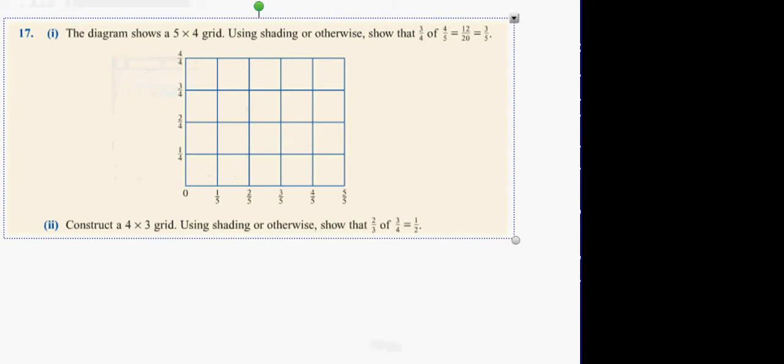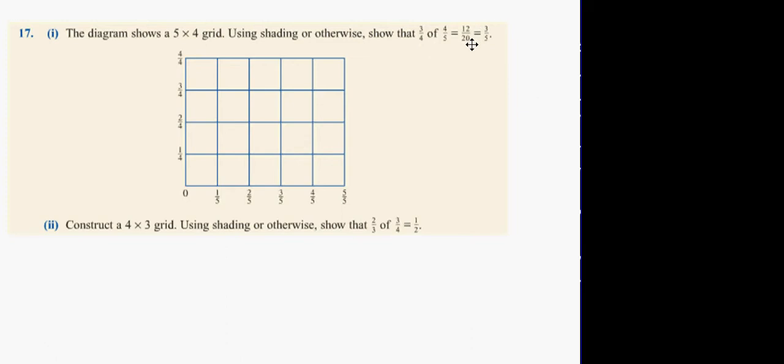The diagram below shows a 4 by 5 grid. Using this shading or otherwise, show that 3 quarters of 4 fifths equals 12 over 20, which is 3 fifths. Now, what you can do here is you can shade in, in let's say green, I'm going to shade in 3 quarters.